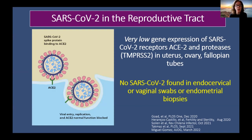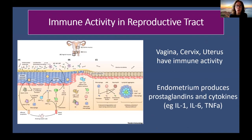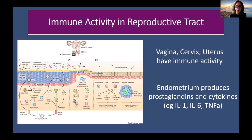The SARS-CoV-2 virus has not been found in vaginal swabs, endocervical swabs, or endometrial biopsies — it is not present and would not be persistent in the reproductive tract, which is critical when thinking about long COVID mechanisms. What is true is that the reproductive tract is highly immunologically active. The vagina, cervix, and uterus have lots of immune activity and antigen-presenting cells. The endometrium produces many prostaglandins and cytokines — compounds that are also elevated during COVID infection and vaccination — making the immune activity in the reproductive tract central to understanding possible biologic mechanisms.